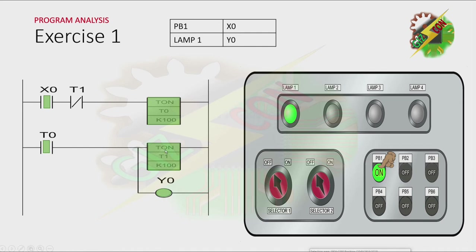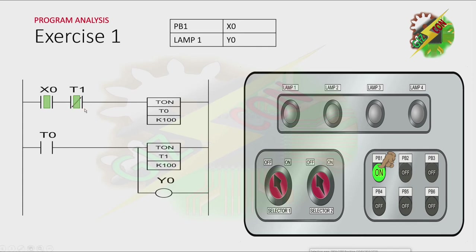Because T0 is activated, that will cause T1 to activate also after one second. And now, because T1 is activated, all the contacts of T1 will change. The normally closed T1 contact will open and that will cause T0 to turn off. Because T0 is off, the contacts will go back to their initial state and that will cause T1 to deactivate. Because T1 is deactivated, the normally closed contact will go back to its initial state, and T0 will be activated again. This cycle continues while X0 is energized.